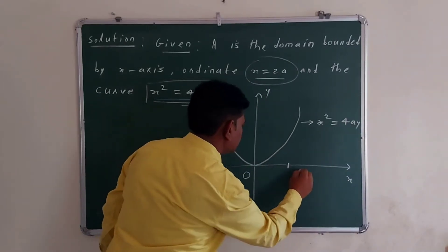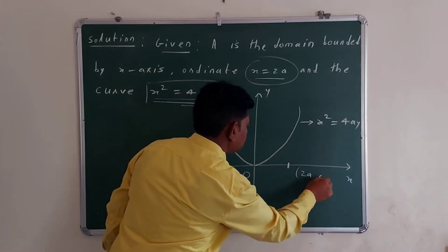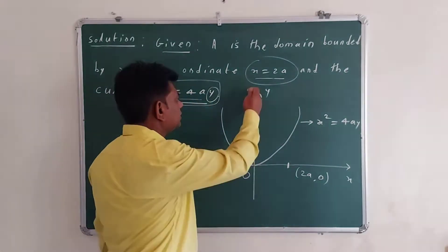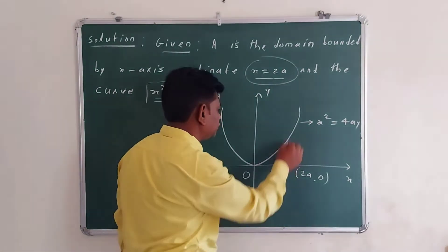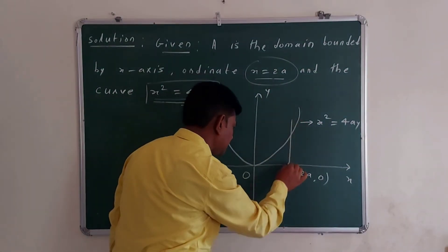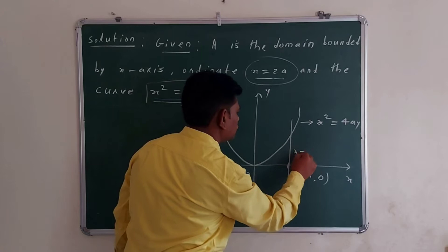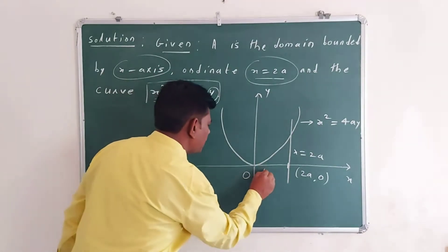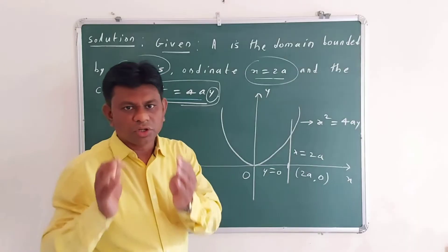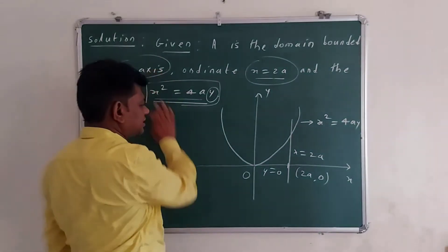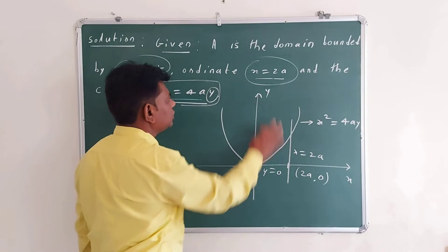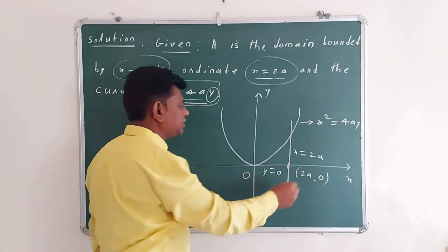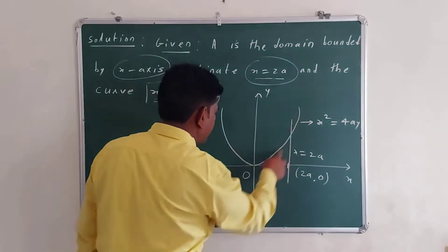If this point is (2A, 0), then X = 2A is a line parallel to the Y axis that passes through this point — this is the line X = 2A. The X axis has equation Y = 0. Therefore, the region of integration is bounded by Y = 0, the line X = 2A passing through the point (2A, 0), and the parabola.